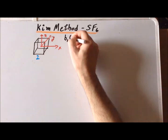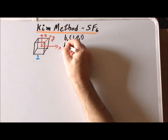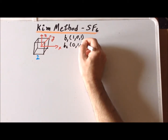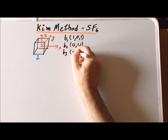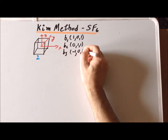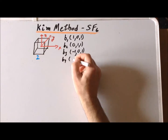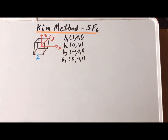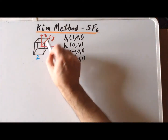B1 is (1, 0, 1), B2 is (0, 1, 1), B3 is (−1, 0, 1), B4 is (0, −1, 1). Notice that these are along the top face of the cube and give points that are at the midpoint of the edges.